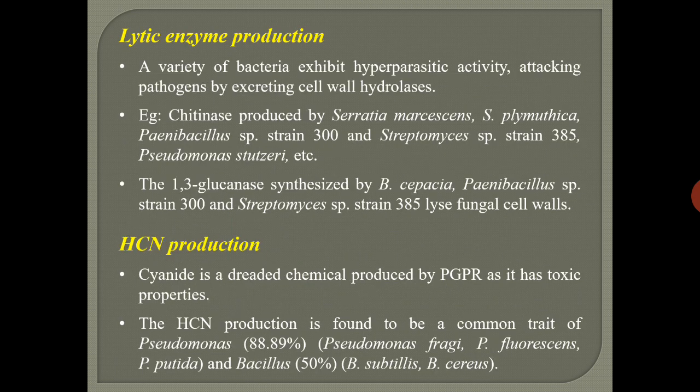Lytic enzyme production — few PGPR can produce enzymes that degrade the pathogenic cell wall. Two major such enzymes include chitinase and 1,3-glucanase, both acting against the fungal cell wall. Chitinase is produced by Serratia marcescens, Serratia plymuthica, Paenibacillus strain 300, Streptomyces species strain 385, and Pseudomonas stutzeri. 1,3-glucanase is produced by Burkholderia cepacia, Paenibacillus species strain 300, and Streptomyces species strain 385. All these lyse the fungal cell walls.